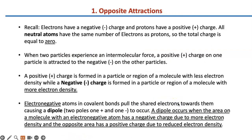Let's look at some preview and intro material. Opposite attractions: you may recall that electrons have a negative charge and protons have a positive charge. All neutral atoms have the same number of electrons and protons, so they have a total zero charge. Particles experience an intermolecular force, meaning the positive charge of one particle or molecule is attracted to the negative charge of another. A positive charge is formed when a region has less electron density, while a negative charge is formed when a region has higher electron density. When you have more electrons, you become negative; when you have less, you become positive.